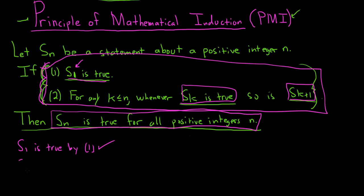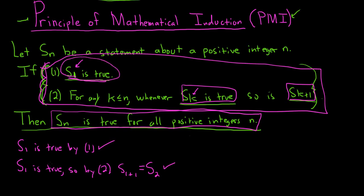We know S1 is true. If k is 1, then we get 1 plus 1, but 1 plus 1 is equal to 2. So S sub 2 is true. We know that S1 is true by our first condition, and since S1 is true, by condition 2, whenever S1 is true, so is S2.